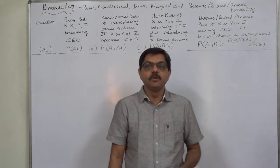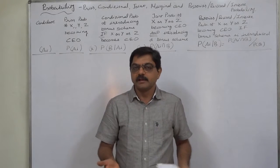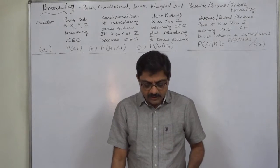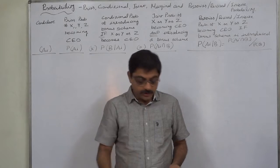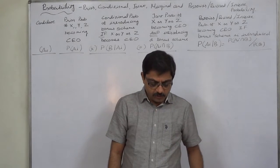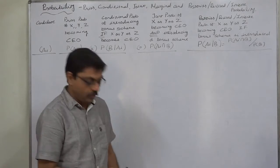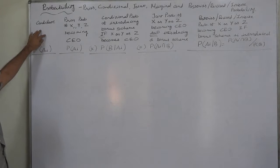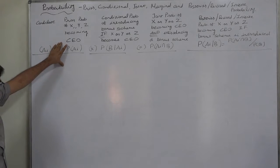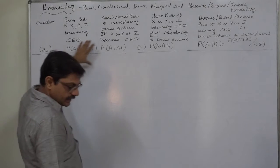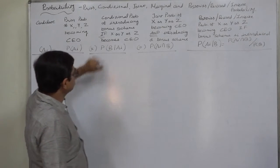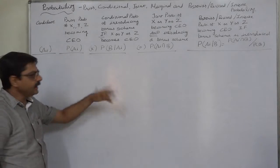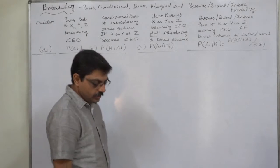If the bonus scheme has been introduced — that is, if we come to know that the bonus scheme has been introduced in the organization — what are the posterior or revised or inverse probabilities that the CEO appointed was X, Y, or Z? There are three cause events, the candidates X, Y, Z. Their prior probabilities are already available: 4 by 9, 2 by 9, and 3 by 9. The conditional probability of introducing bonus schemes if X, Y, or Z becomes CEO is also available.